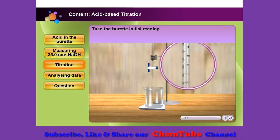Take the burette initial reading. Record it to two decimal places. For example, 10.90 cubic centimetre. The initial reading does not need to be at zero.